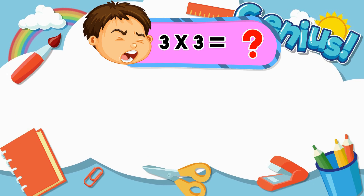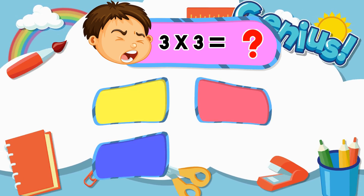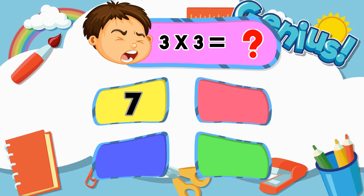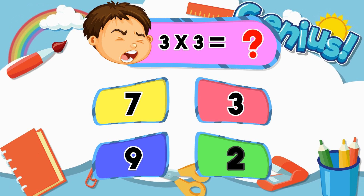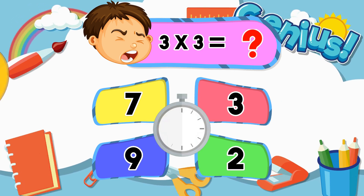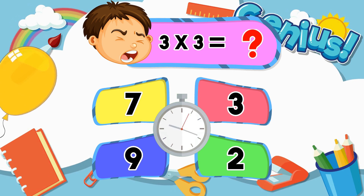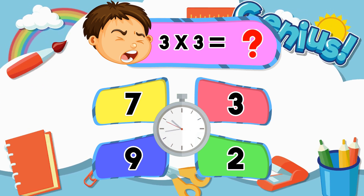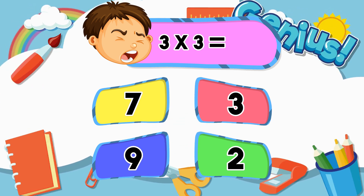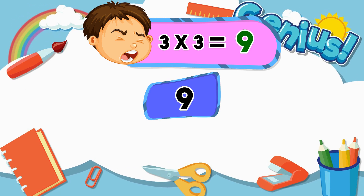What is 3 times 3? 7, 3, 9, 2. [Answer:] 9.